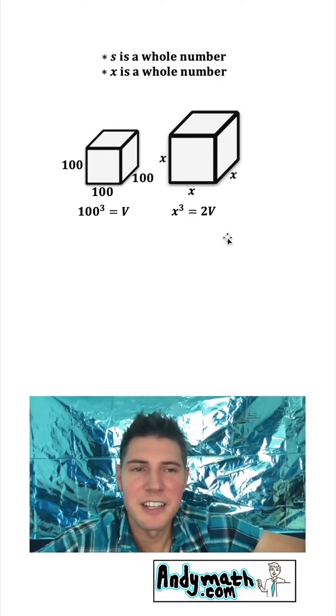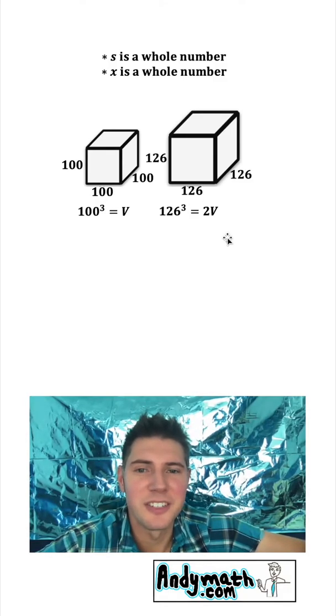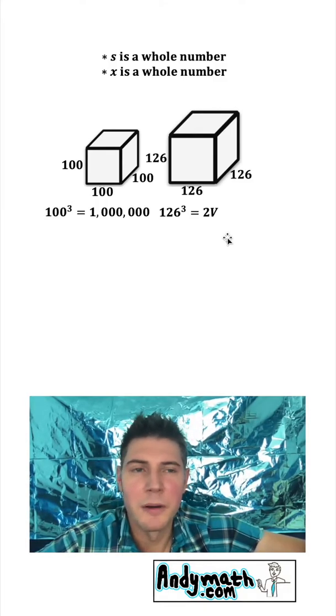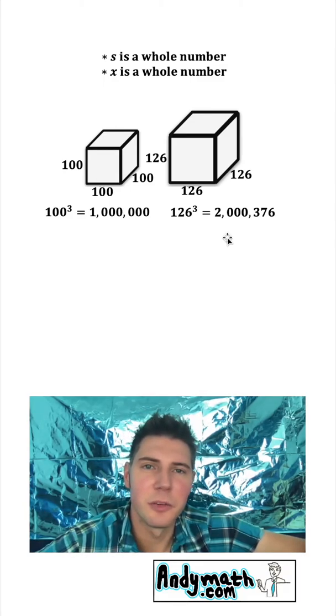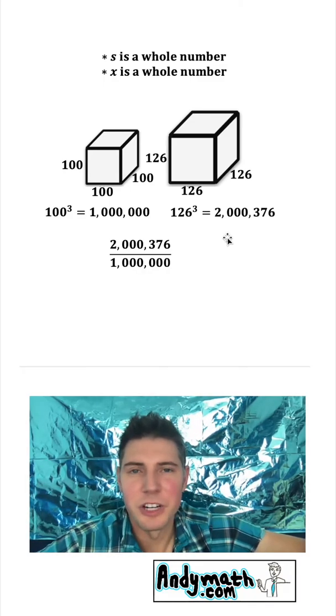Let's try it again with some bigger numbers. Let's make s 100 and x 126. Well, 100 cubed is 1 million, and 126 cubed is 2,000,376. Check out the ratio of those.